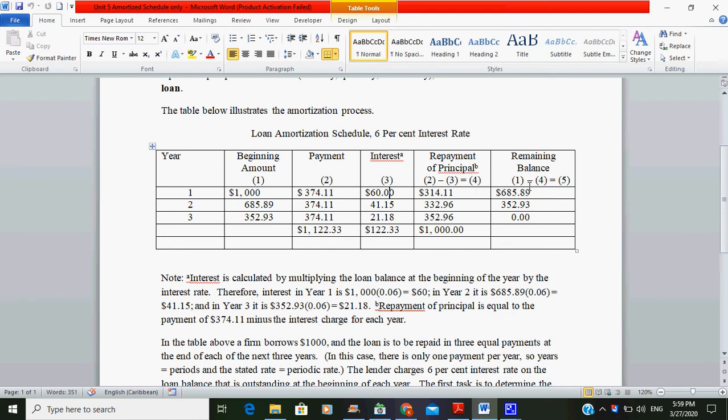This now, you'll bring over to here. This is already calculated from before, which is a given. For this now, it will be 685 times 6%, 0.06, to give you 41.15. Then you go again with repayment of principal: payment minus interest, which is 332.96. Then 685.89 minus 332.96 to get the remaining balance. You bring the balance over here, multiply by 6% again. You get 21.18. Then you have this minus this, you get 352.93, and you get about 0.03. But this is really zero actually.